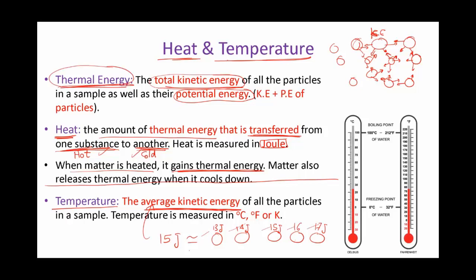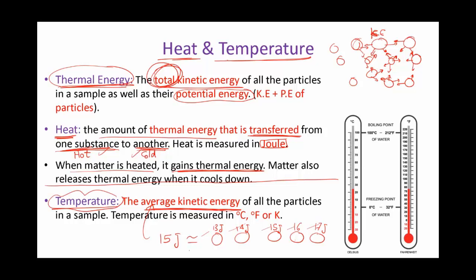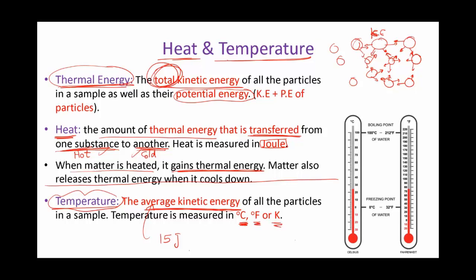Temperature is different from thermal energy. Thermal energy is the total kinetic and potential energy — you add 13+14+15+16+17 and so on. Temperature only measures the average, not the total. So take care that thermal energy is different from temperature. Temperature should be measured in joules, but there are convenient units used to describe temperature, which are Celsius, Fahrenheit, and Kelvin.